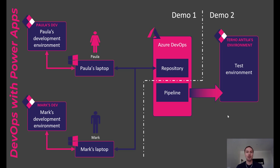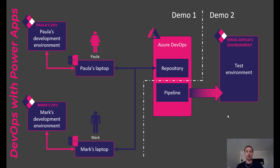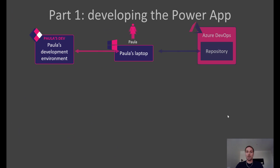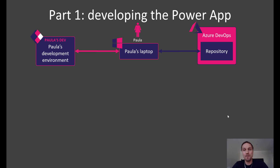So this is the demo scenario. Paul and Mark are both working on their own laptops, and they also have their own development environments where they will do the implementation of the PowerApp. But they are connected to the same Azure DevOps repository where they will store the source codes of the app. That is how they can synchronize the development so that Paula can get the version from the repository whenever she wants to. Let's take a look at demo one scenario first.